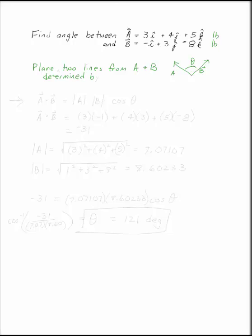These are two vectors in three space, and I want to find the angle between them. So if you had a plane that was determined by the two lines from A and B, so that in some plane there is the vector A and the vector B, we want to find the angle between them.